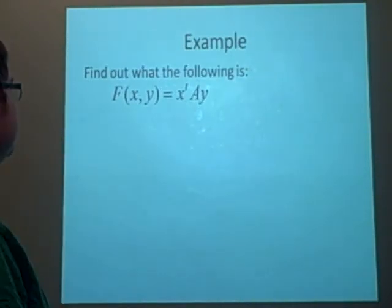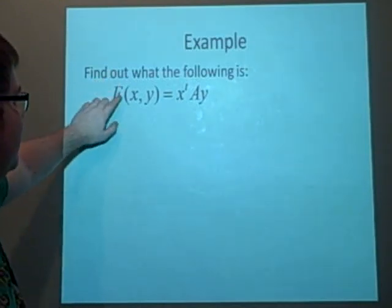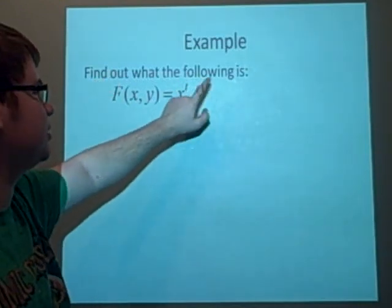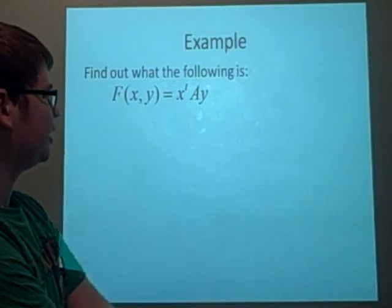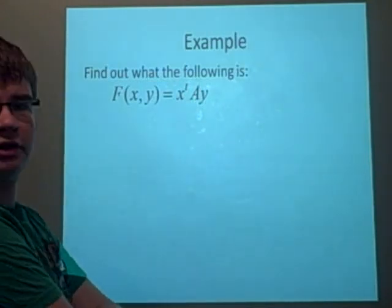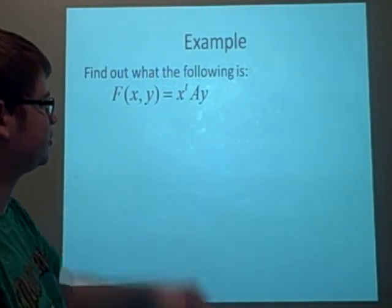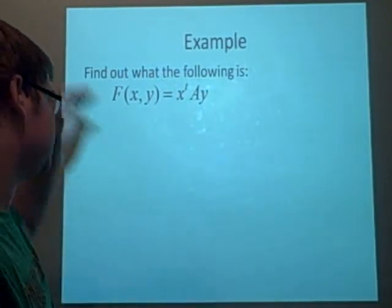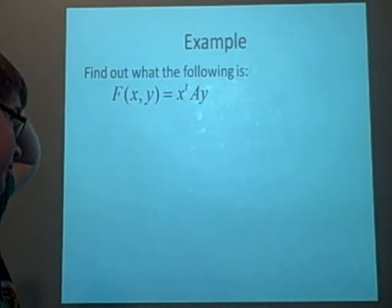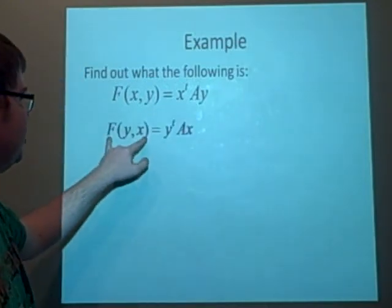Our final example, again this is not a very long video. We've got f of xy is x transposed times ay, and in this case x, a, y are all matrices, because we've got the transpose. So we'll try to see if it's either sesquilinear or bilinear first.